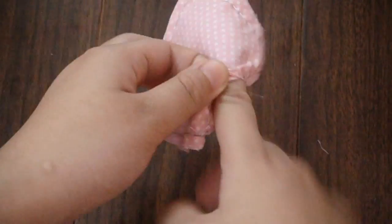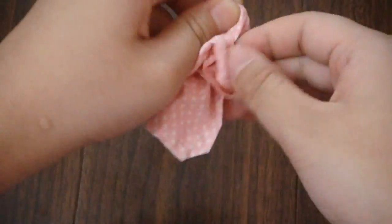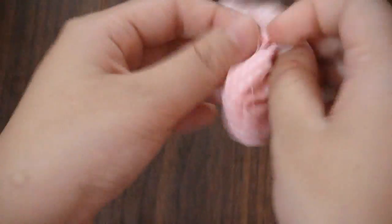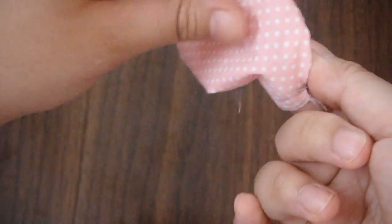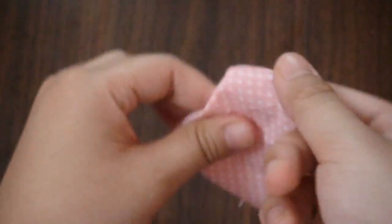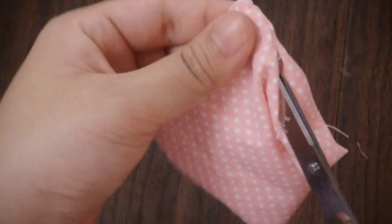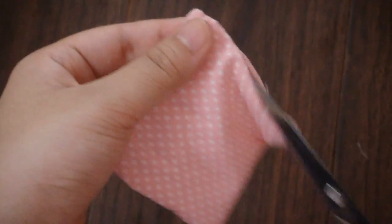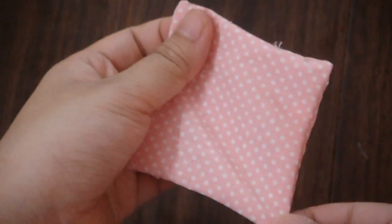Now it's time to flip it inside out. So just stick your finger in, reach for one of the corners and bring that corner out and slowly gently work the fabric. Now I want the corners to turn nicely so I'm going to use a pair of scissors or something blunt to push out those corners.